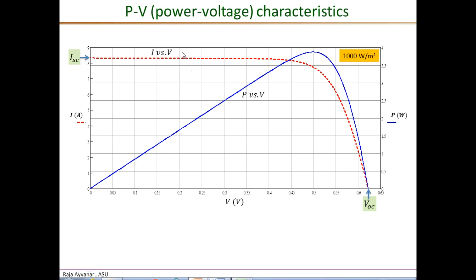At the short circuit point ISC, even though the current magnitude is large, the voltage is zero, so their product — the power — is also zero. As the voltage increases with current almost constant, the power rises nearly linearly. This almost linear rise continues up to around the point where the current begins to drop appreciably.